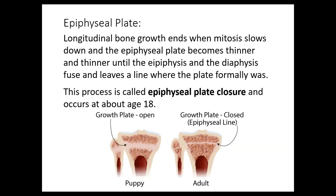Number nine: what happens during epiphyseal plate closure? As the body approaches the end of adolescence, bone lengthening stops. Long bone growth ends when mitosis slows down and the epiphyseal plate becomes thinner and thinner until the epiphysis and the diaphysis fuse, leaving a line where the plate formerly was. This process is called epiphyseal plate closure and tends to occur around the age of 18.